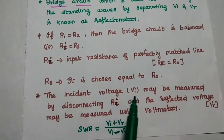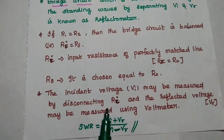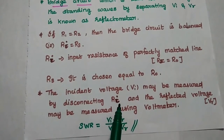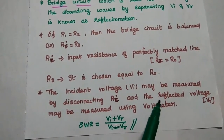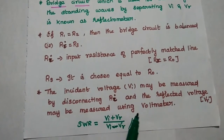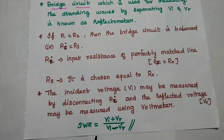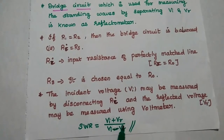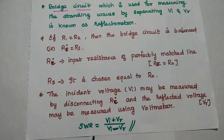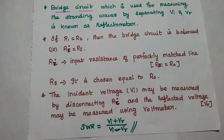The incident voltage Vi may be measured by disconnecting the input resistance, and the reflected voltage may be measured using the voltmeter. Finally, we obtain the incident voltage and reflected voltage, and from that we can calculate the value of the standing wave ratio using the formula.